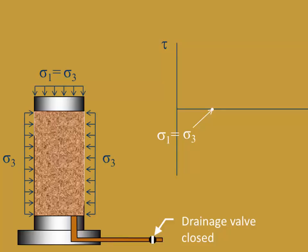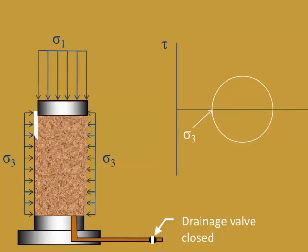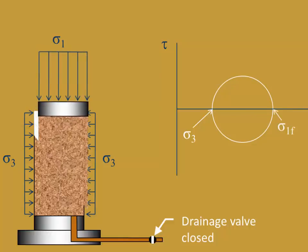Once the consolidation phase is complete, the shear phase starts by increasing the vertical stress applied to the specimen. The minor principal stress sigma3 does not change as we shear the specimen. We continue to increase the vertical stress until the specimen fails. At failure, the maximum principal stress is sigma1f, and the soil has an undrained strength SU. Because the drainage valve was closed during the consolidation phase, no consolidation occurred, and the soil did not gain any strength. Therefore, the undrained strength under confining stress is no greater than the undrained strength measured by an unconfined compression test of the same soil.